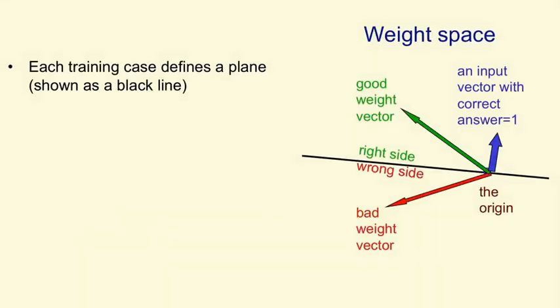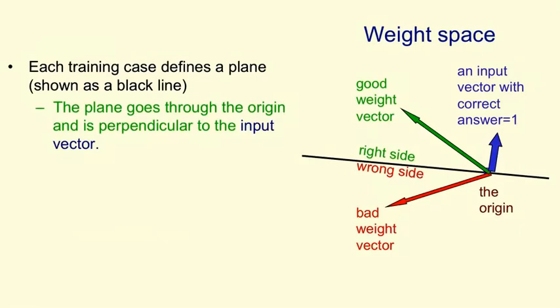Here's a picture of weight space. The training case, we're going to think of one training case for now. It defines a plane, which in this 2D picture is just the black line. The plane goes through the origin and it's perpendicular to the input vector for that training case, which here is shown as a blue vector.